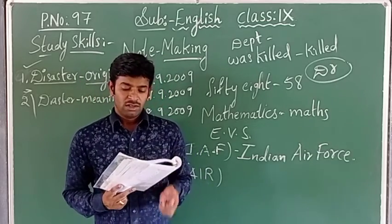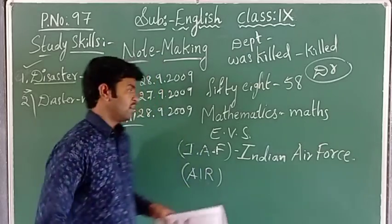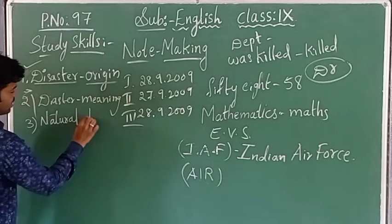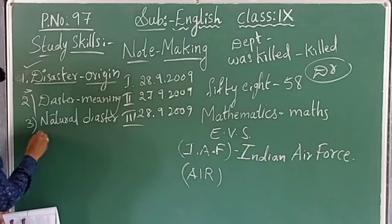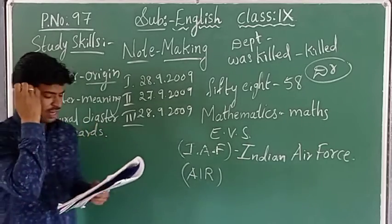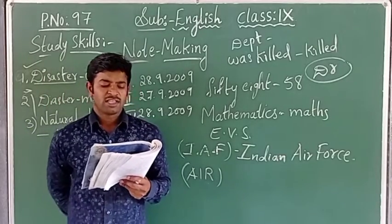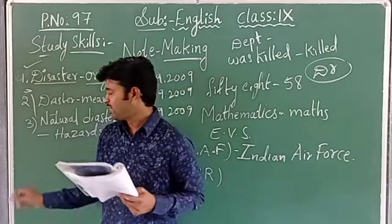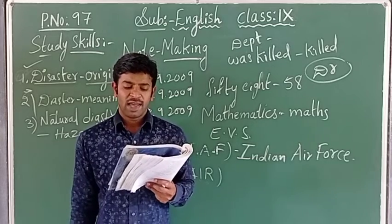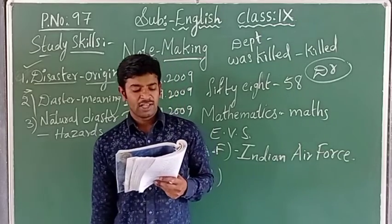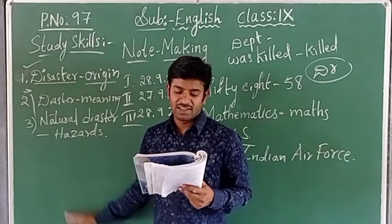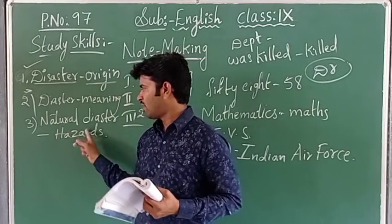Third note point: natural disaster or hazard. What are the natural disasters? Various phenomena like earthquake, landslide, volcanic eruption, floods and cyclone — these all come under natural disasters or hazards. You have noted the third note point.